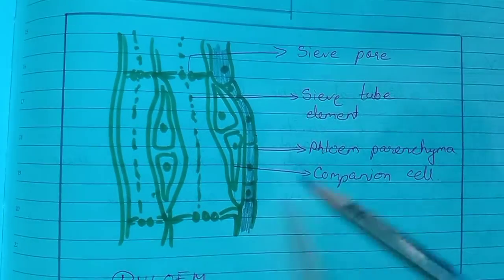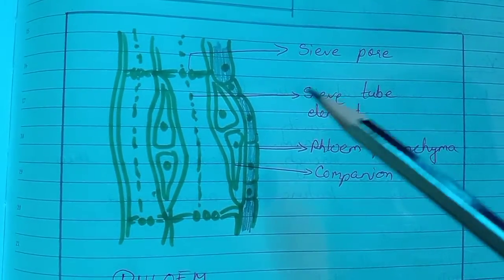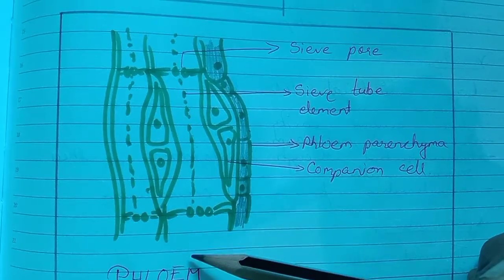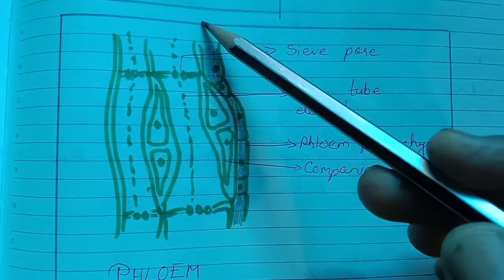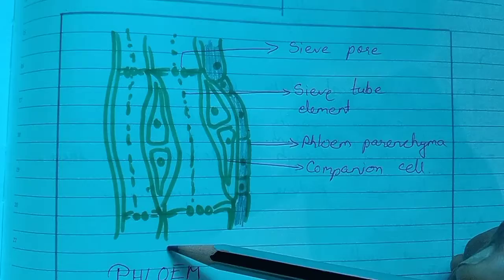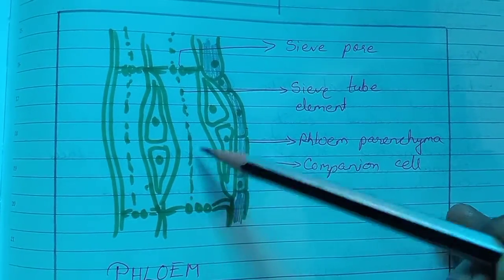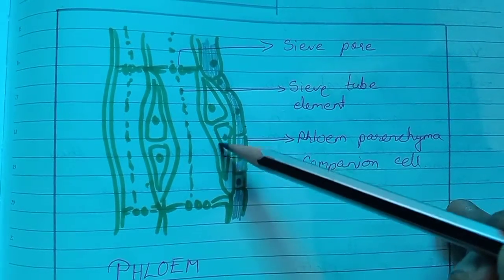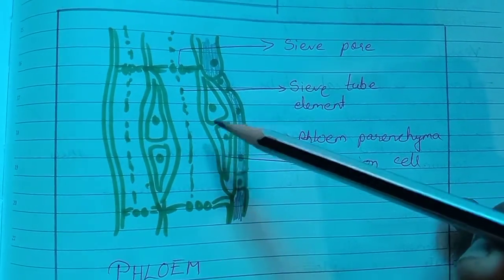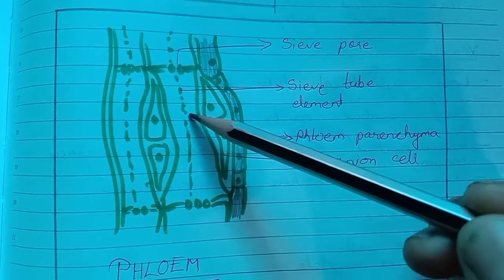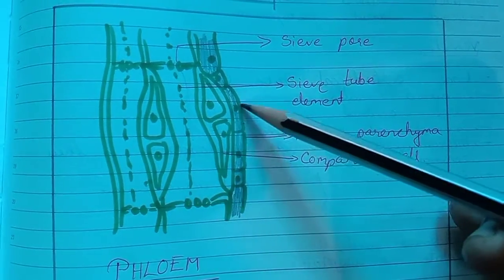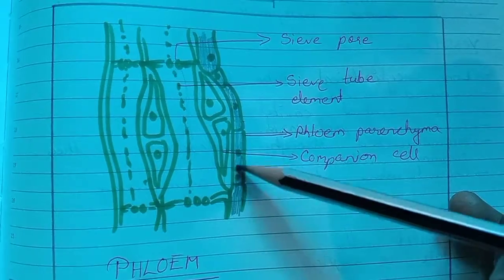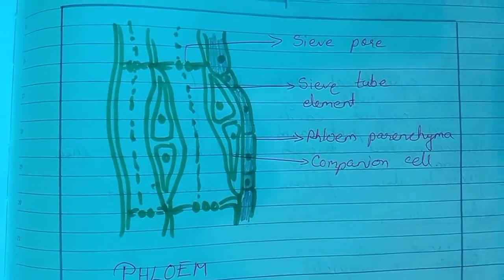The phloem is a tubular structure which takes food materials from the leaf to different parts of the plant body. The sieve tube is controlled by the companion cell's nucleus, which also maintains the pressure gradient in the sieve tubes. Phloem parenchyma is mainly meant for storage of food.